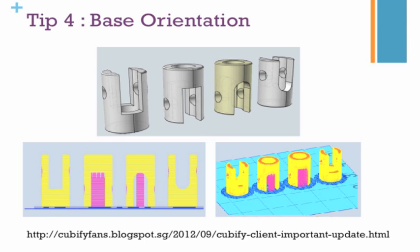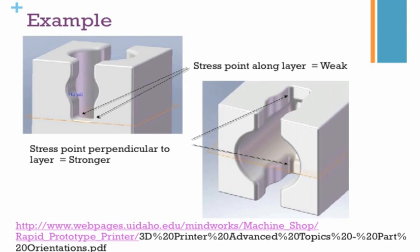Orientation also determines the strength of your part. From the picture on the top left, you can see that the stress points of the 90-degree corner joint are parallel to each layer — along the layer building direction — which results in a very weak joint. However, in the picture on the right, a different orientation places the stress point perpendicular to the layers, resulting in a stronger joint and a stronger part overall.